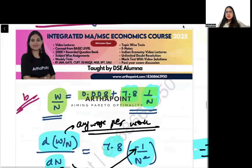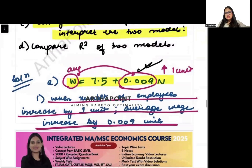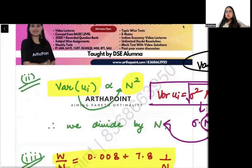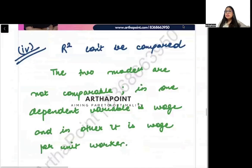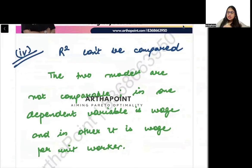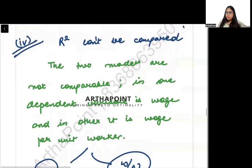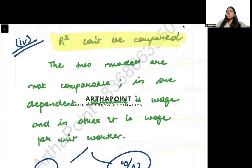Next part asks to compare R-squared of the two models. Because the dependent variable is not in the same format, we cannot go ahead and compare the R-squared. R-squared are not comparable in this case because the dependent variable is not in the same format. Thank you.